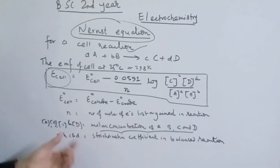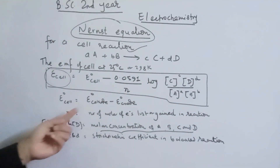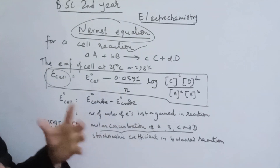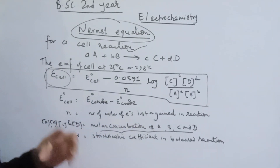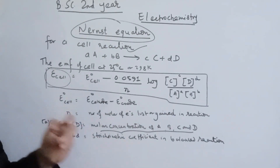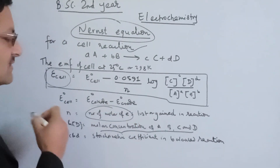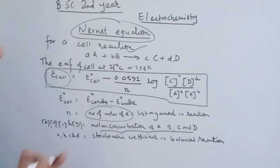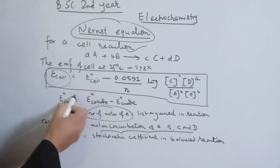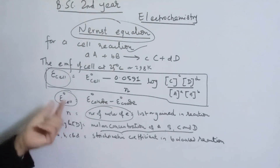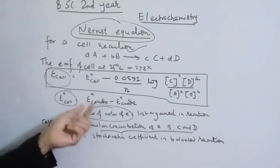n is the number of moles of electrons lost or gained during the cell reaction. The EMF of the cell equals E cathode minus E anode.